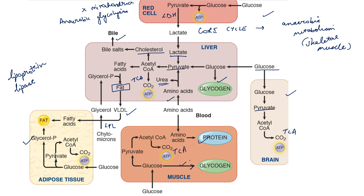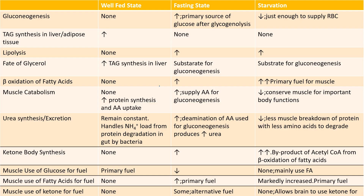That finishes metabolism in the well-fed state. Quick recap: Is there any gluconeogenesis in the well-fed state? No. Is there synthesis of fat? Yes. No lipolysis occurs. Glycerol is used for triglyceride synthesis. Muscle catabolism — does it occur? No. In fact, there is anabolism, that is increased protein synthesis. Urea synthesis will remain constant.